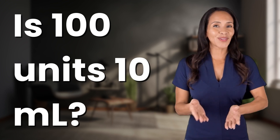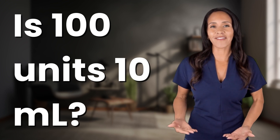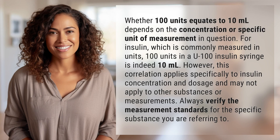Welcome back to your daily dose of discovery. Let's unravel today's intriguing question. Whether 100 units equates to 10 milliliters depends on the concentration or specific unit of measurement in question. For insulin, which is commonly measured in units, 100 units in a U100 insulin syringe is indeed 10 milliliters.